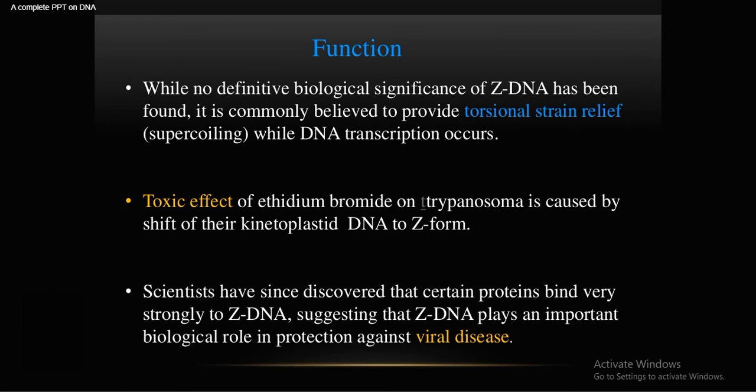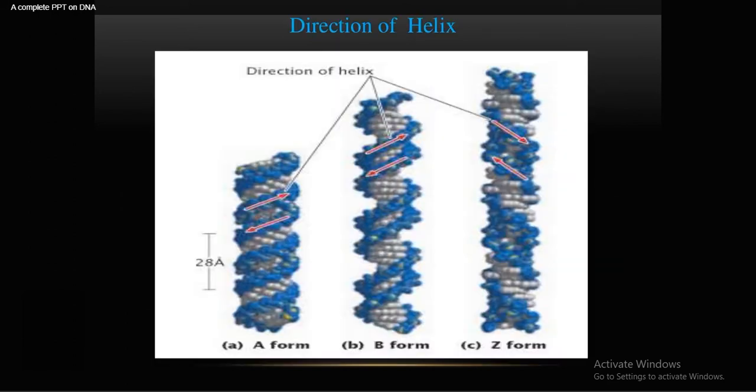Z-DNA is commonly believed to provide torsional strain relief or supercoiling to DNA while DNA transcription occurs. The toxic effect of ethidium bromide (EtBr) on trypanosomes is caused by a shift of their kinetoplast DNA to the Z-form. Scientists have also discovered that certain proteins bind very strongly to Z-DNA, suggesting it plays a very important biological role in protecting against viral diseases.